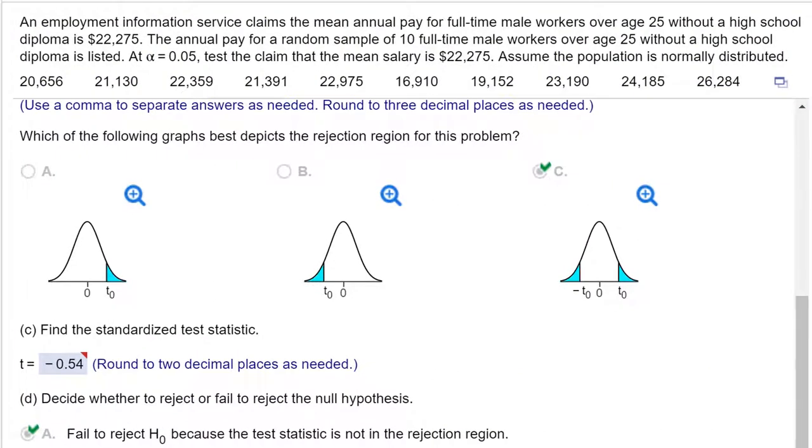Hi, this is Dr. Don. I have a problem out of Chapter 7, Section 3, in which we're given some raw data, and that seems to throw a lot of students.